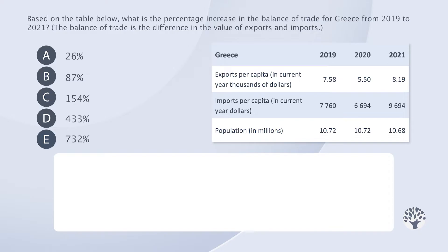We'll start by carefully analyzing the question. The question reveals two things: the concept we need to use and the data we need to look at. Based on the table below, what is the percentage increase in the balance of trade for Greece from 2019 to 2021? The balance of trade is the difference in the value of exports and imports. This will involve a percentage change calculation for Greece between 2019 and 2021.